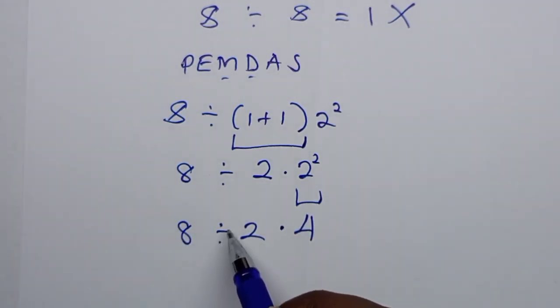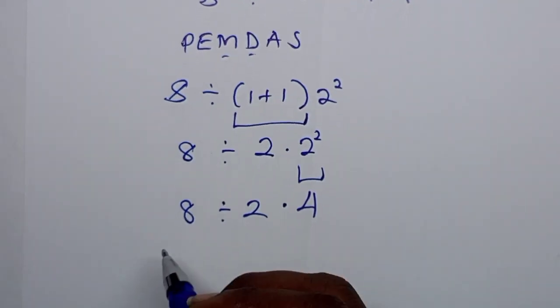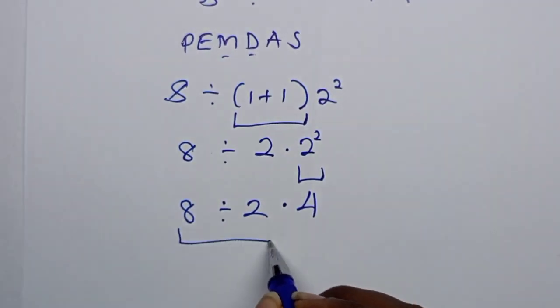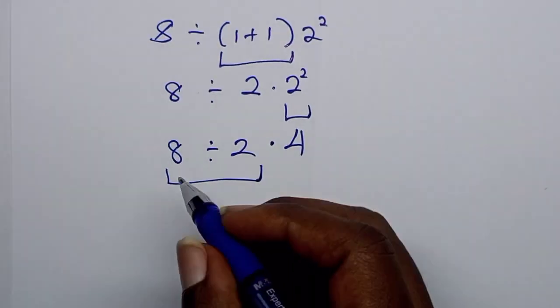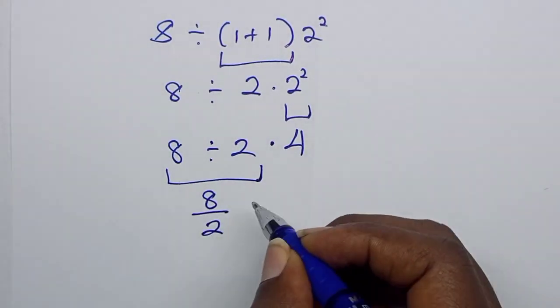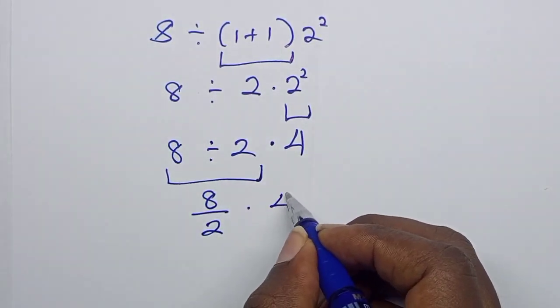And in our case, the division sign comes first before the multiplication. That means you are going to consider the division first. So we are going to divide 8 by 2. So we shall have 8 over 2, then times 4.